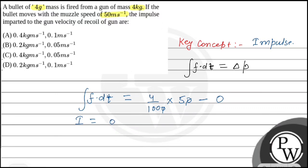Solving this, the impulse comes out to be 0.2 kg·meter per second. This is the impulse imparted to the gun.